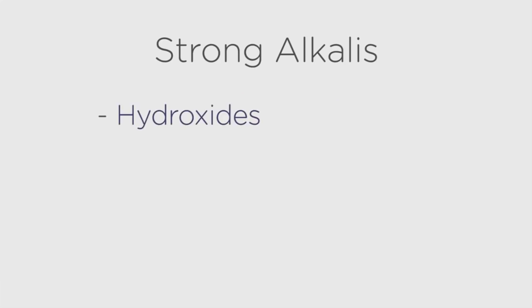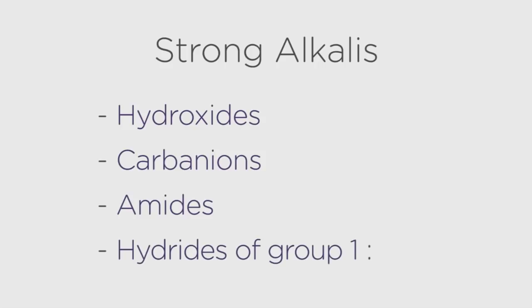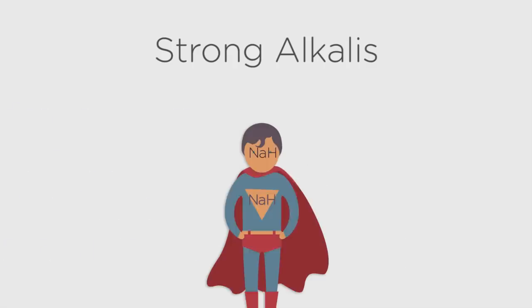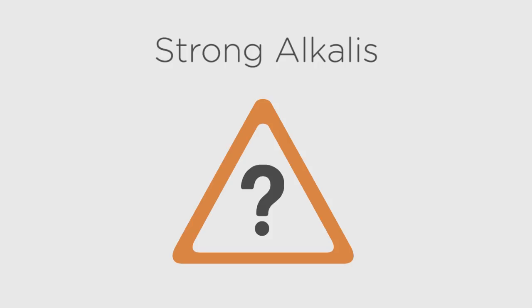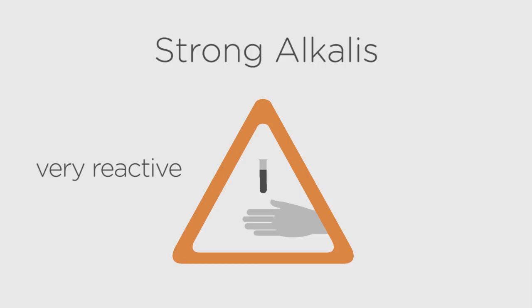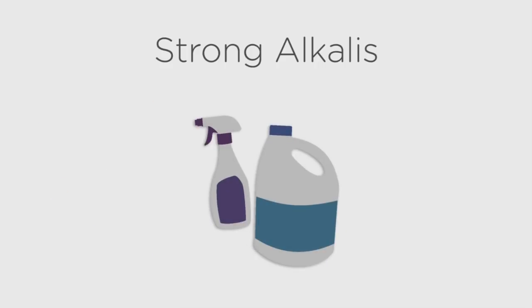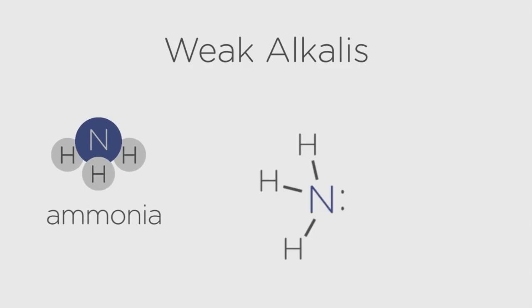Strong alkalis include hydroxides, carbonate ions, amides, and hydrides of group 1 metals. Sodium hydride is known as a super base. Strong bases are very dangerous because they are very reactive and thus corrosive — many cleaning fluids are strong bases. Organic alkalis are usually weaker. Very weak alkalis include chemicals like ammonia, which use their lone pair of electrons to accept protons. They do not dissociate in water to give a negatively charged ion, so the bond to H+ is weaker.